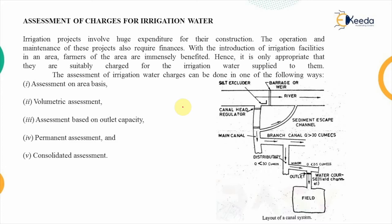The irrigation water supplies are insured to the farmers by the government. We looked at the canal system — on an existing river, several barrages or weirs are constructed, and through that the water is diverted into the main canal, after that to the branch canal, then to the distributory, and ultimately to the minor distributory — the last part of the network, known as the water course or field channel.